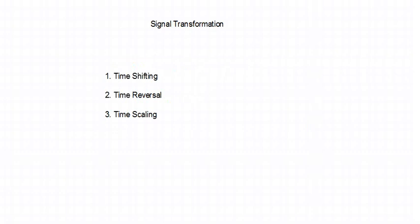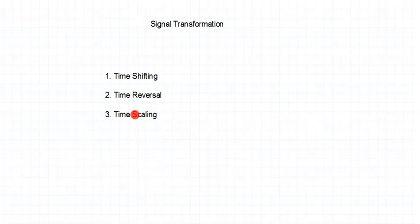What do we mean by the word transformation? Signal transformation means operations on the signal. These operations are shifting, reversal, and scaling. The transformation means operations on the signal — we are going to do certain operations, certain modifications on the signal.